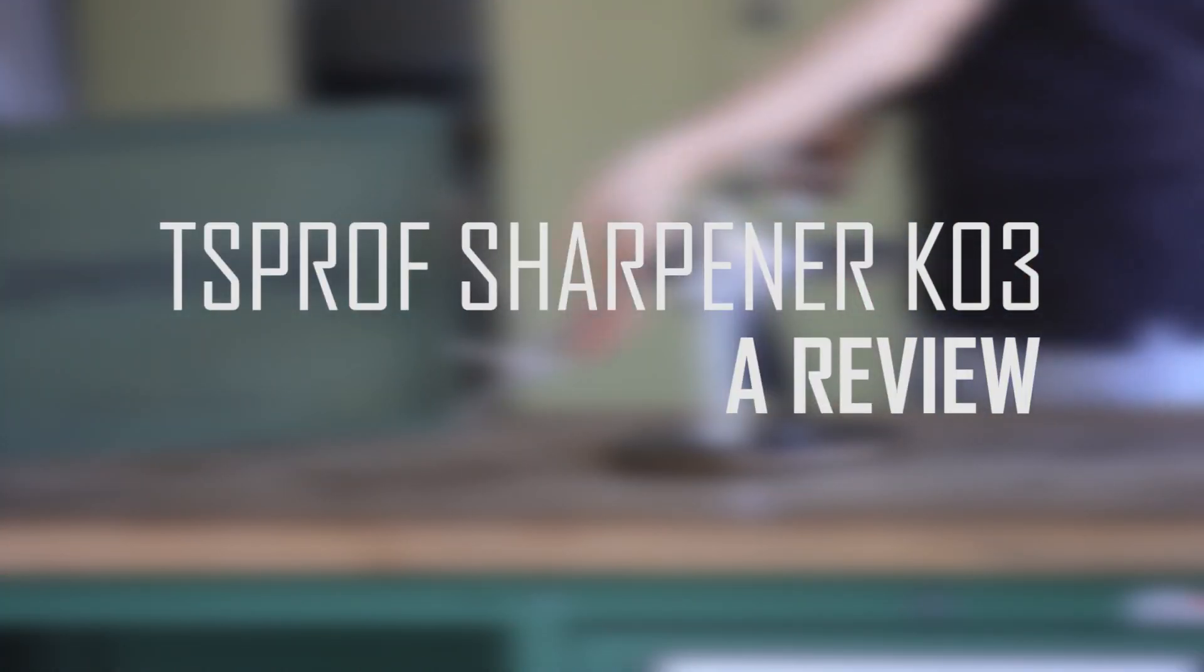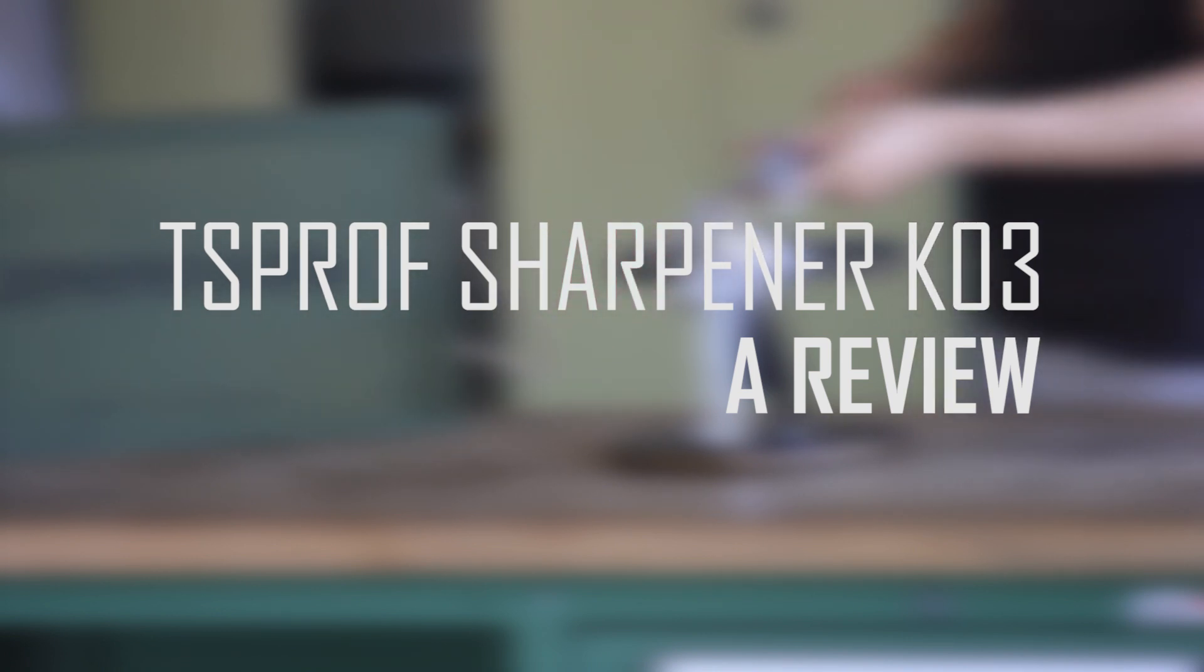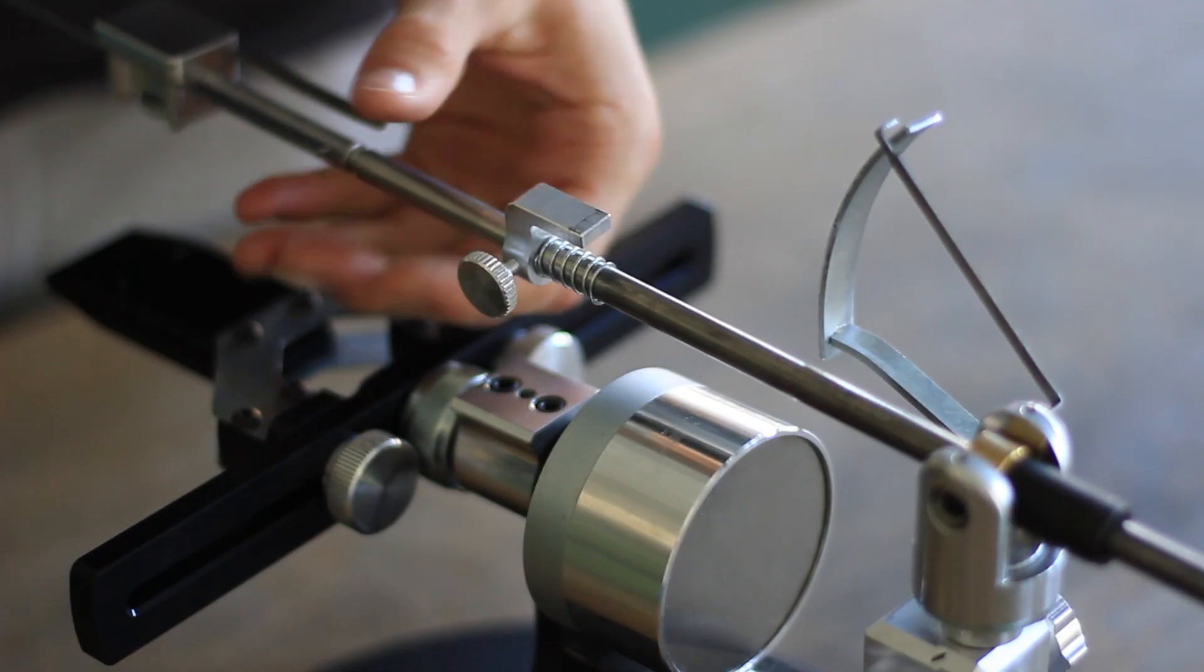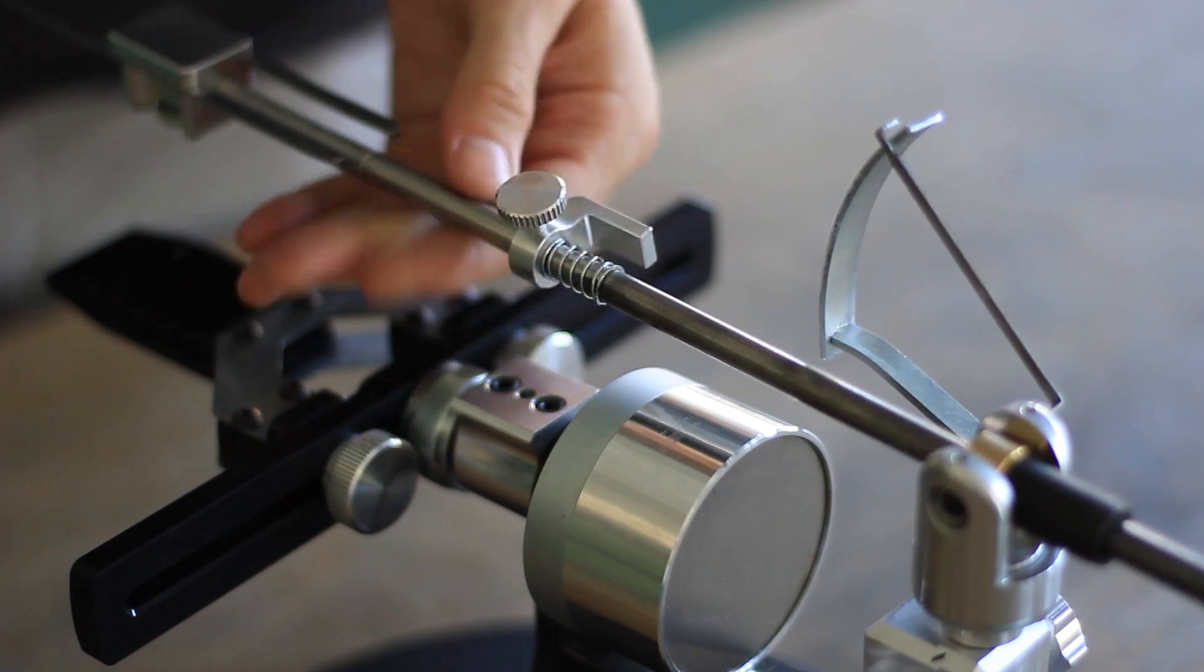Six kilograms of finely machined steel and aluminum delivered in a wooden box. That's the sharpener that has been sent to me from Russia, and now roll the intro.